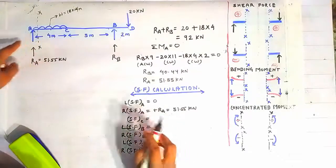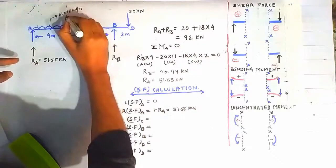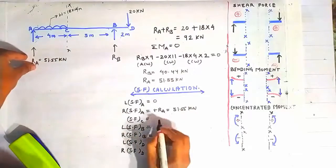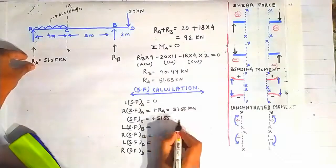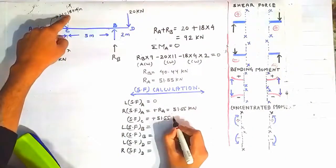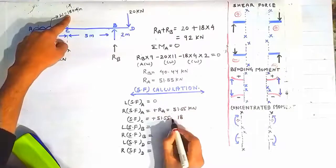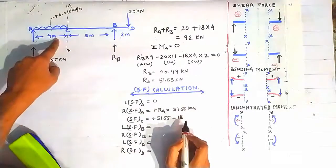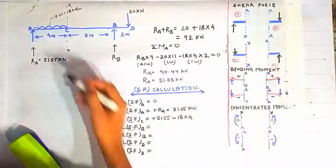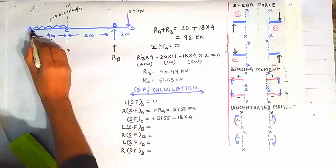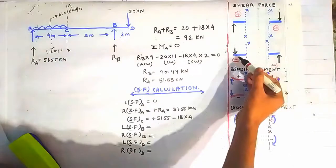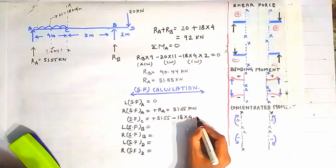For shear force at point C, draw a section through C and look at the left side. Ra contributes a positive shear force, while the UDL between A and C contributes a negative shear force of intensity 18 into 4 meters, using our sign convention — because the UDL acts downward at a distance of 2 meters from point A. Solving, the shear force at C is minus 20 kN.